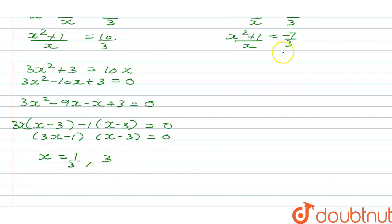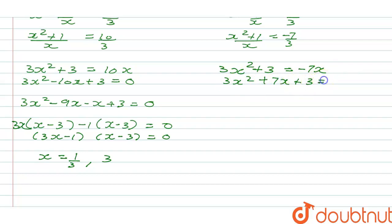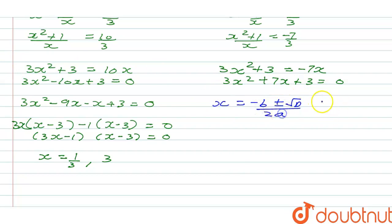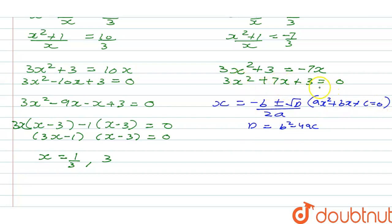We still need to solve Case 2. Cross-multiplying x plus 1 by x equals minus 7 by 3 gives 3x squared plus 3 equals minus 7x, so the standard equation is 3x squared plus 7x plus 3 equals 0. Since the middle term cannot be split easily, we apply the quadratic formula: x equals minus b plus or minus square root of d over 2a, where d equals b squared minus 4ac.